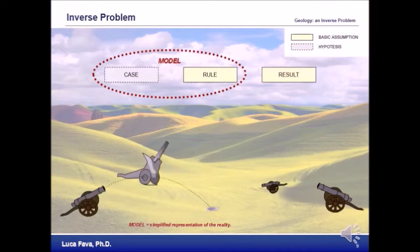As you can see from this very simple animation, there are multiple solutions of the problem of the hole in the ground. In other words, different cannons in different positions can create that hole in the ground.